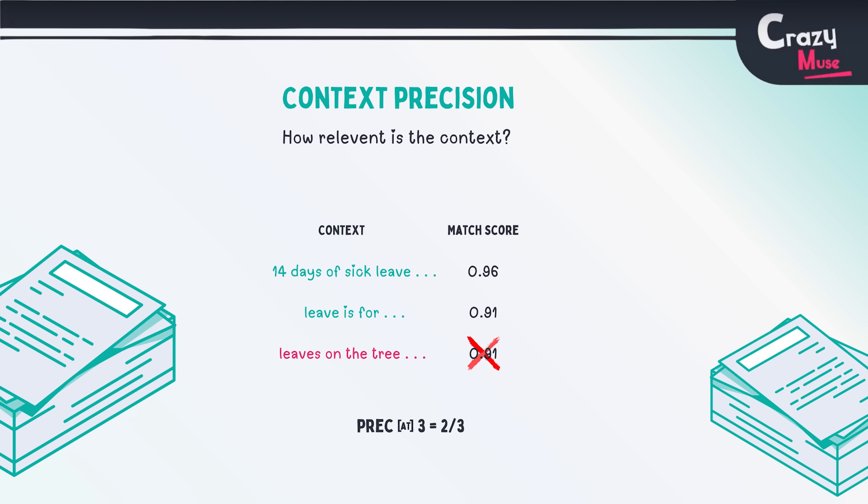Another important metric is context precision — it evaluates retrieval performance. It tells you what percentage of retrieved context is actually relevant to the answer. For example, if you query about leaves, the context shouldn't contain information about joining processes or leaves on a tree.